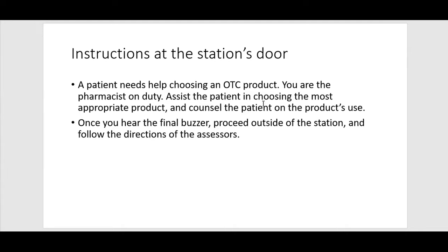You know that you need to help the patient choose an OTC product — that means there is more than one OTC product that will be presented in the room. You're the pharmacist and you need to assist the patient to choose one product and then counsel the patient on how to use it. So you're not just going to pick a product; you have to counsel the patient on its use. Once you hear the final buzzer, proceed outside the station and follow the instructions of the assessors.